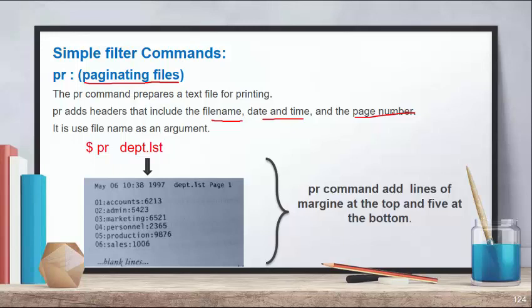With the PR command, you can use a file name as an argument. You prepare the file for printing and see the output of the PR command on your terminal.